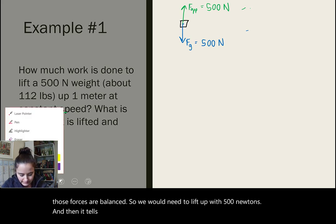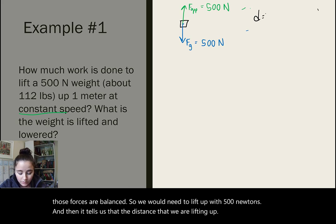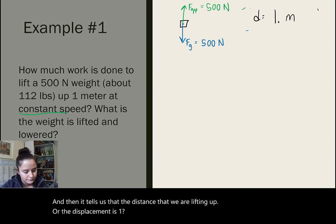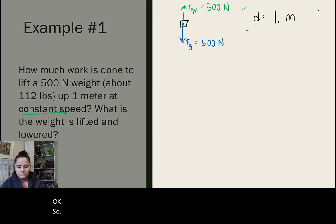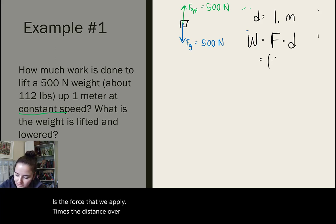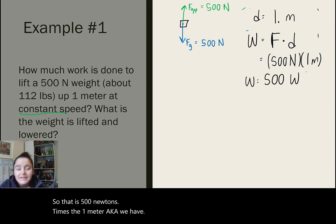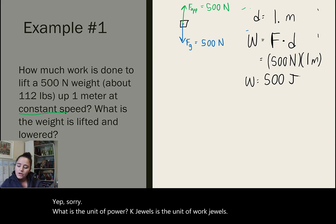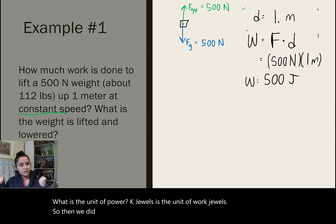And then it tells us that the distance that we are lifting it up or the displacement is 1 meter. So, to find the work, we're looking at the direction that it's moving in. So, the work that we do is the force that we apply times the distance over which we apply that force. So, that is 500 newtons times the 1 meter, aka we have 500... Sorry. Watts is the unit of power. Joules is the unit of work. So, we did 500 joules of work to lift up that weight.